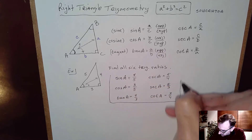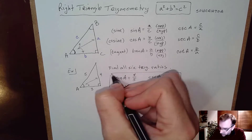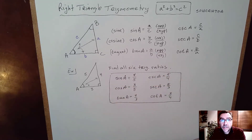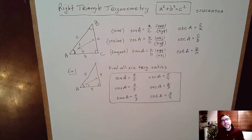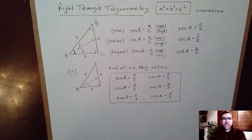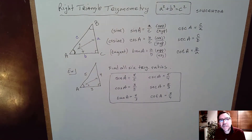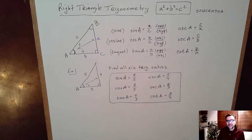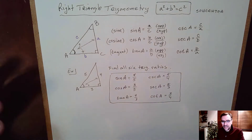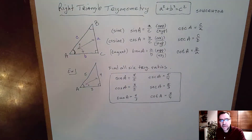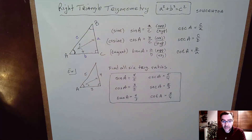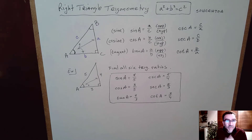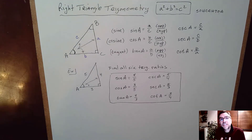Those are the six trig ratios for this particular right triangle. It's amazing how many real-world applications you can get just by looking at these ratios. These ratios contain that scale factor we were talking about when doing similar triangles.